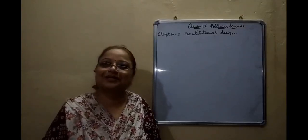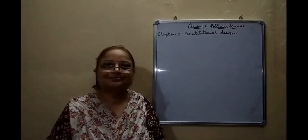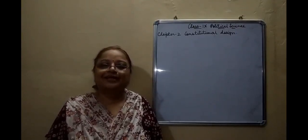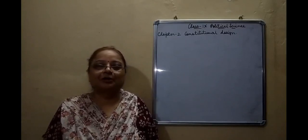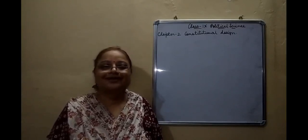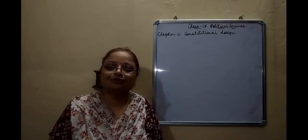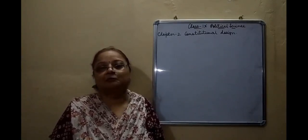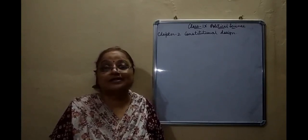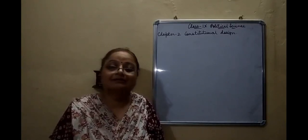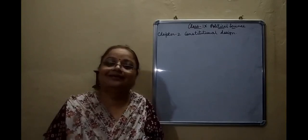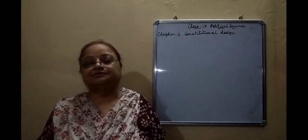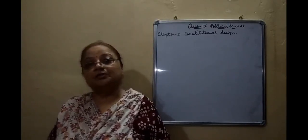Hello dear students, welcome to the class today. We are carrying on with the second chapter in political science where we are talking about the framing of the constitution. The constitution that has been framed in South Africa — we have seen the complete process, how the whites have been dominating the blacks, the freedom struggle began, and then a time came when the blacks got power.